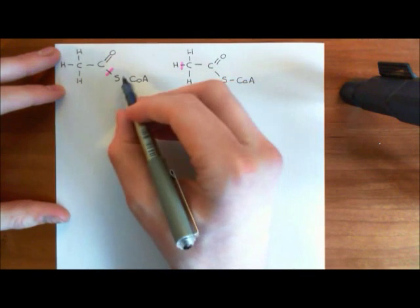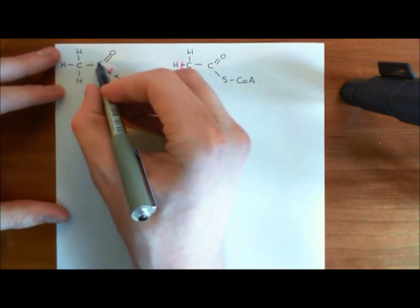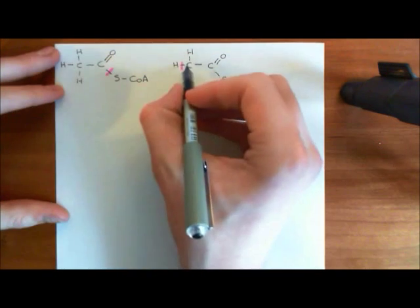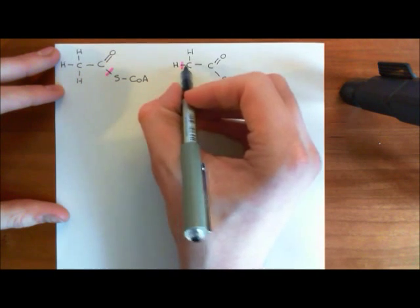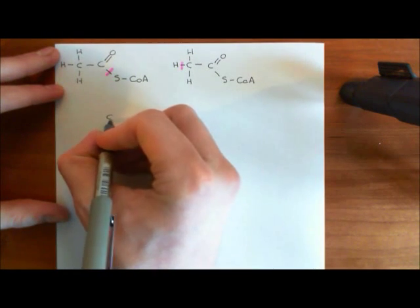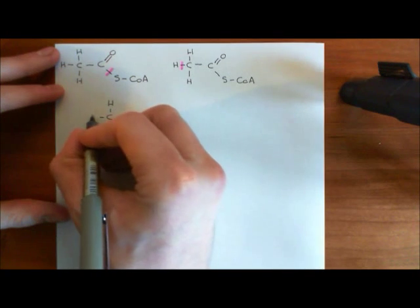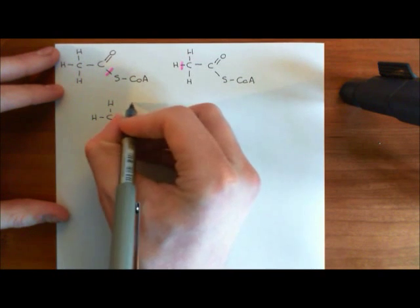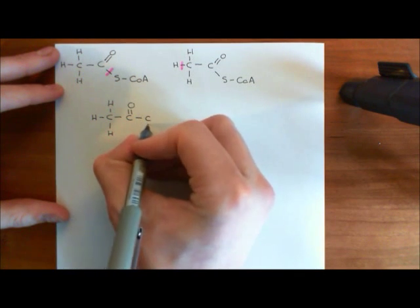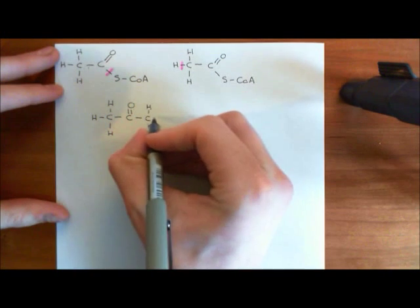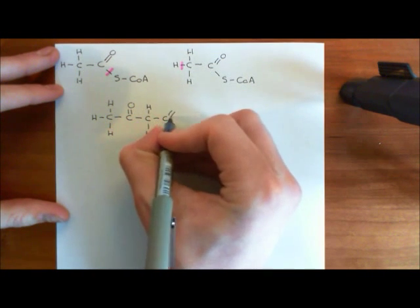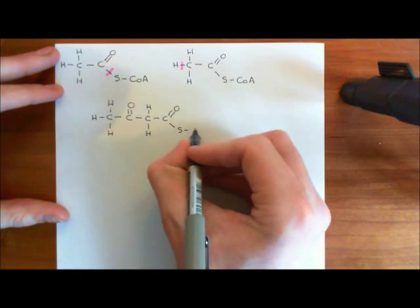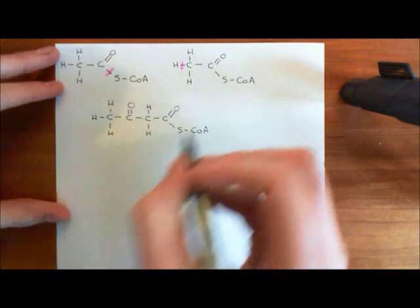We have these two acetyl coenzyme A molecules, and what we're now going to do is bind this carbon — which has the free electron from the breaking of this bond — to this carbon over here, which has the electron from the breaking of this other bond. What we'll end up with is: a methyl group here, then a carbonyl group, then the methylene group in the middle, and then the carboxyl group bound to the coenzyme A molecule via a thioester link.